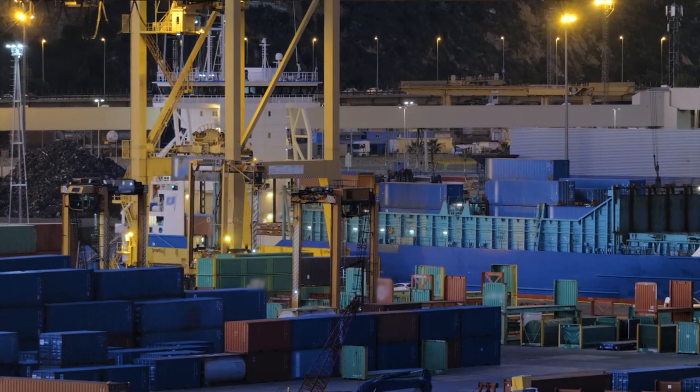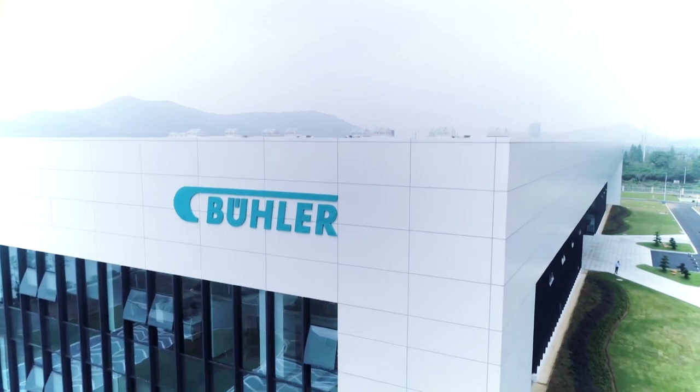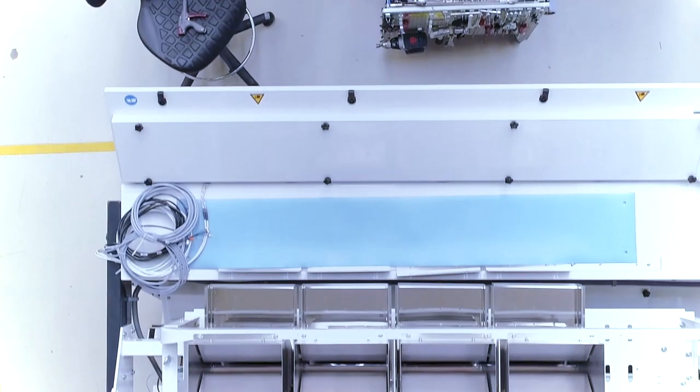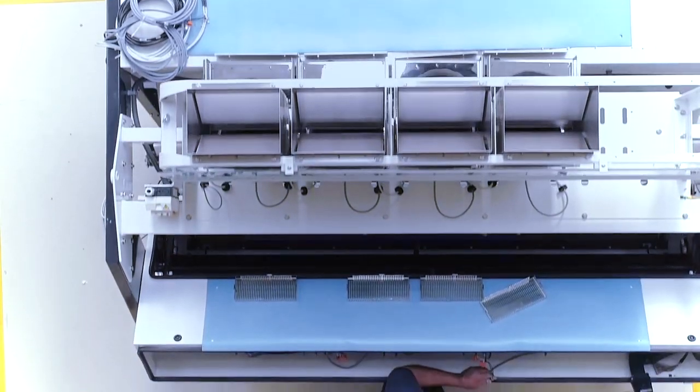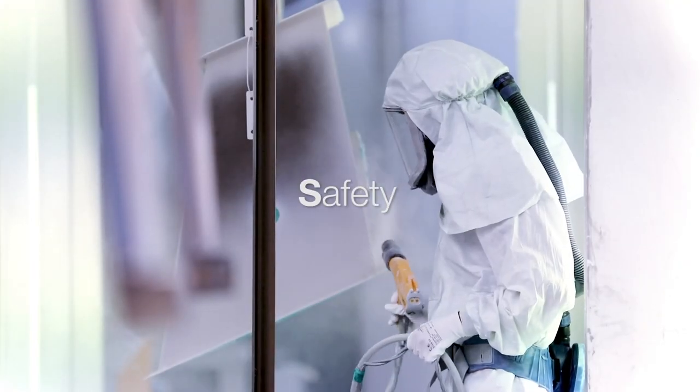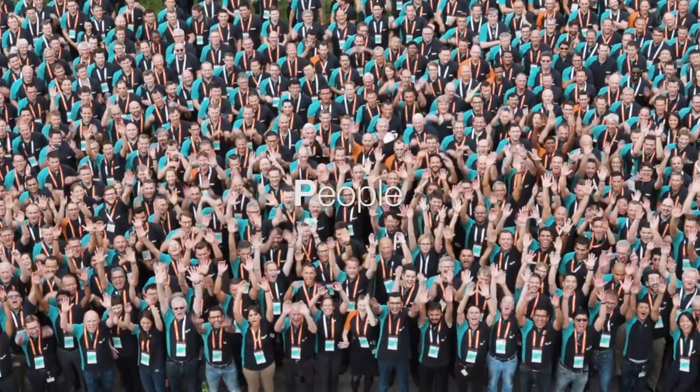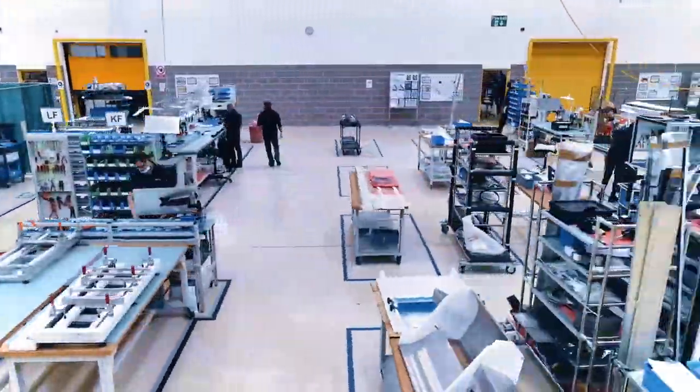Bula UK is built on a strong lean manufacturing and continuous improvement culture. Safety, quality, cost, delivery, and people—all of it comes together to give you a machine that performs as well in 10 years as it does today.